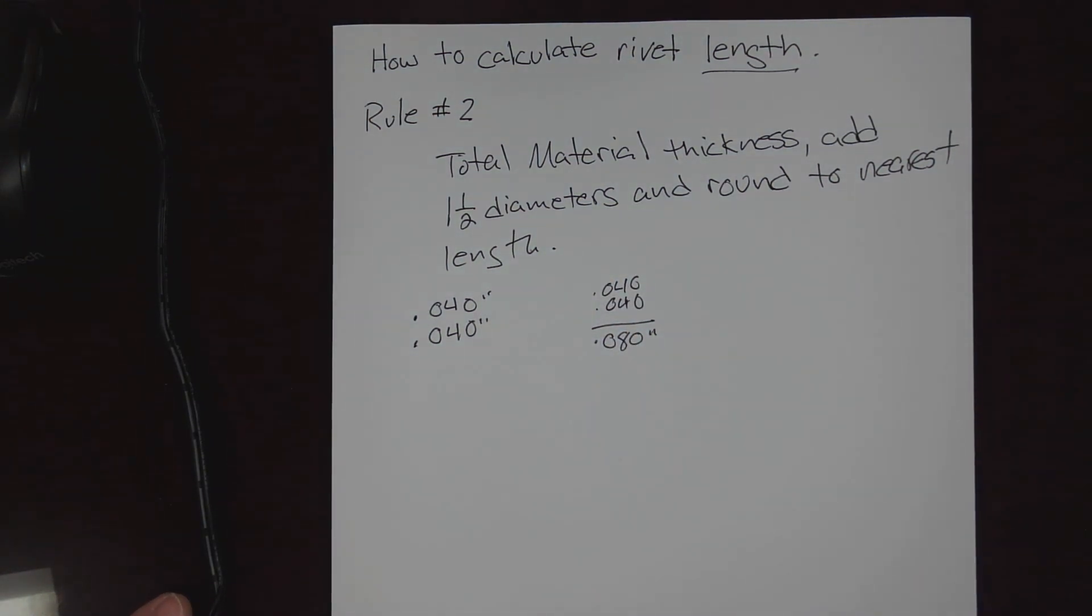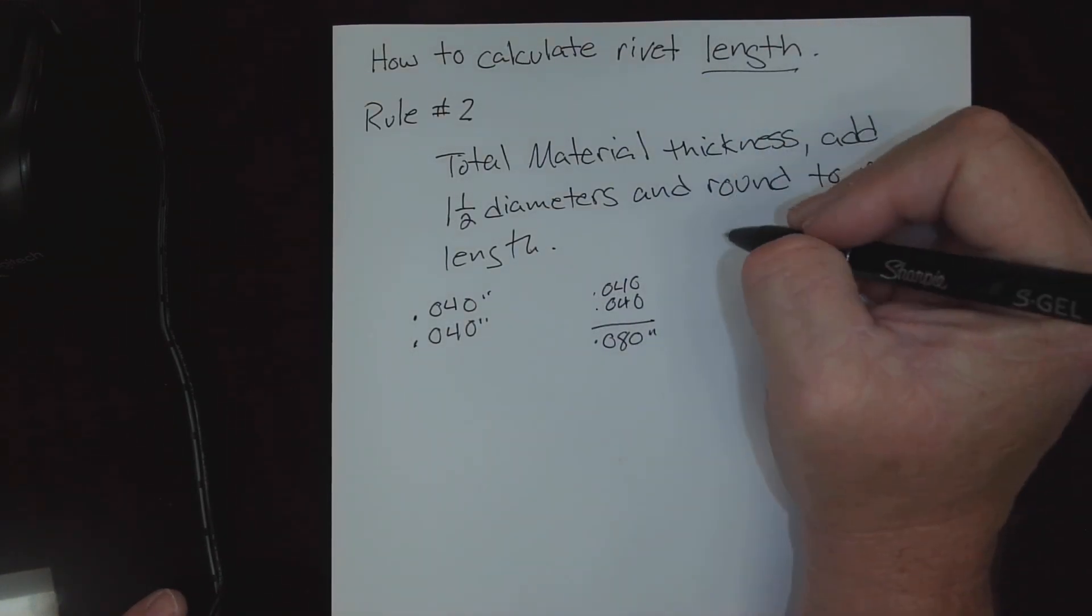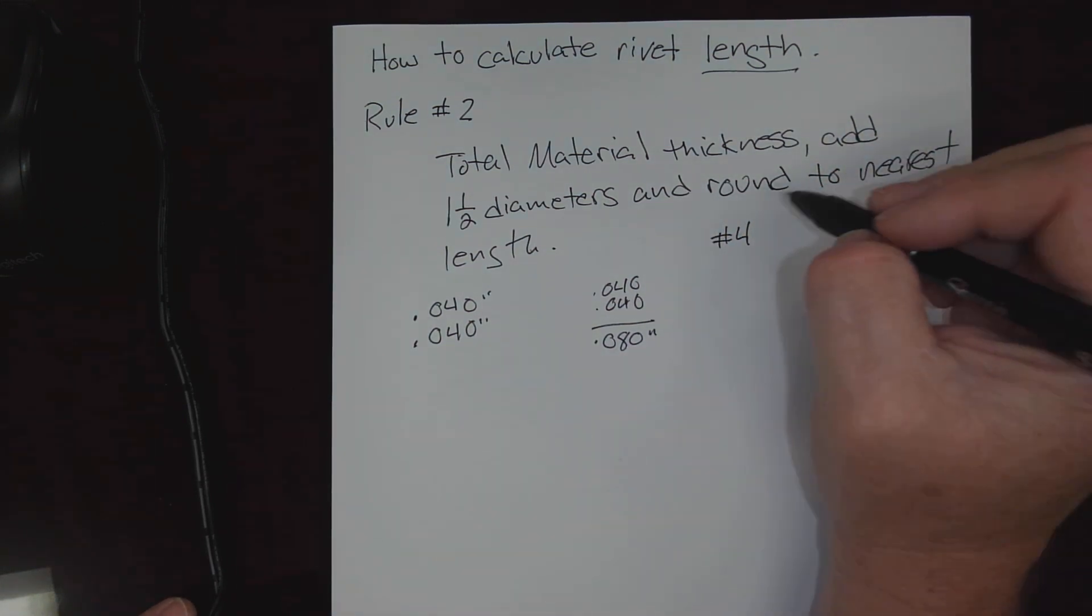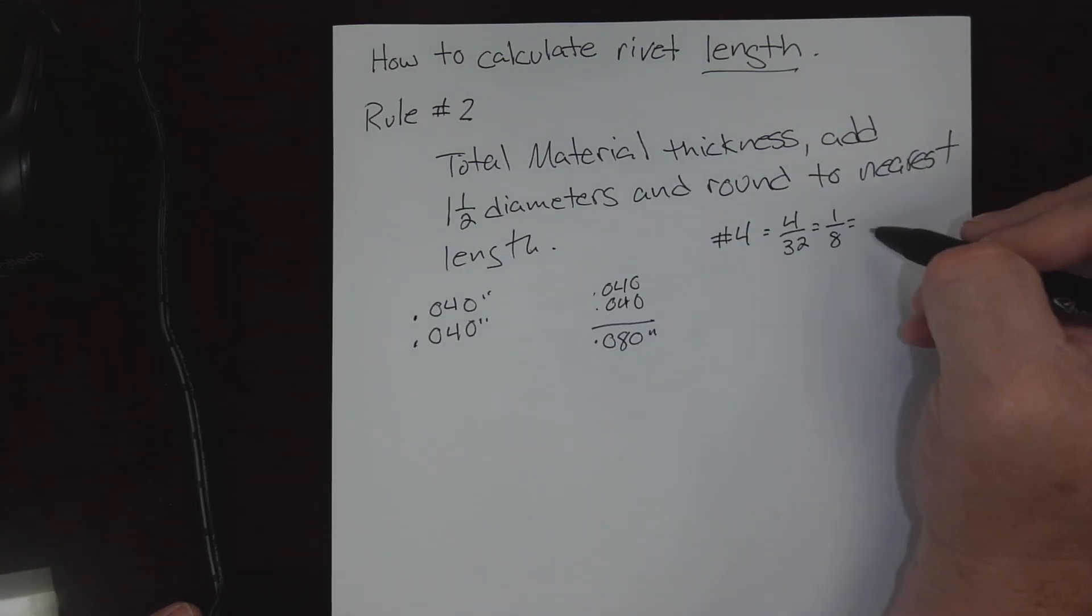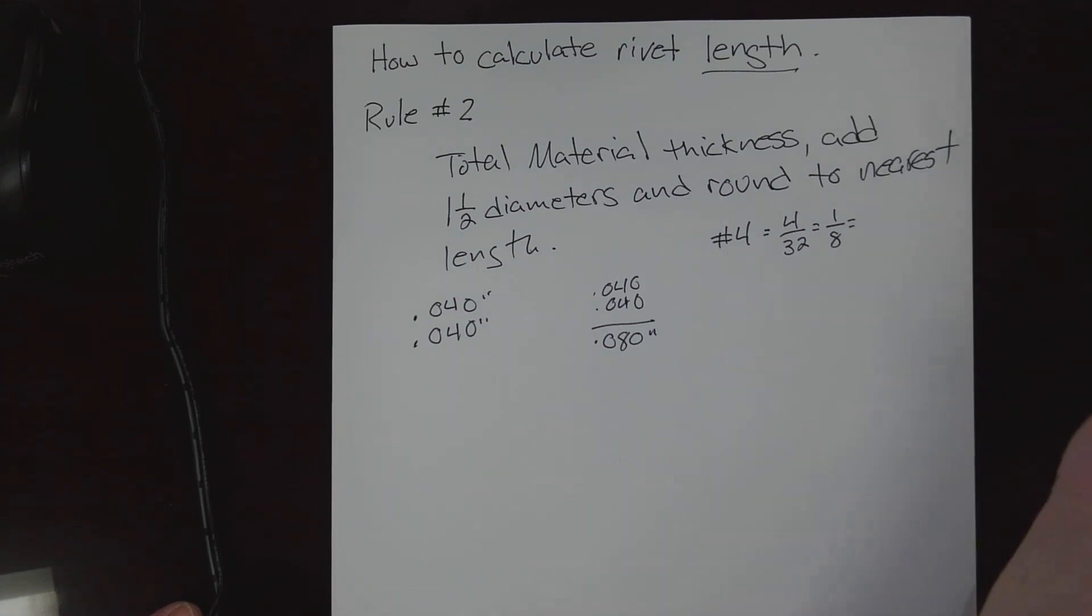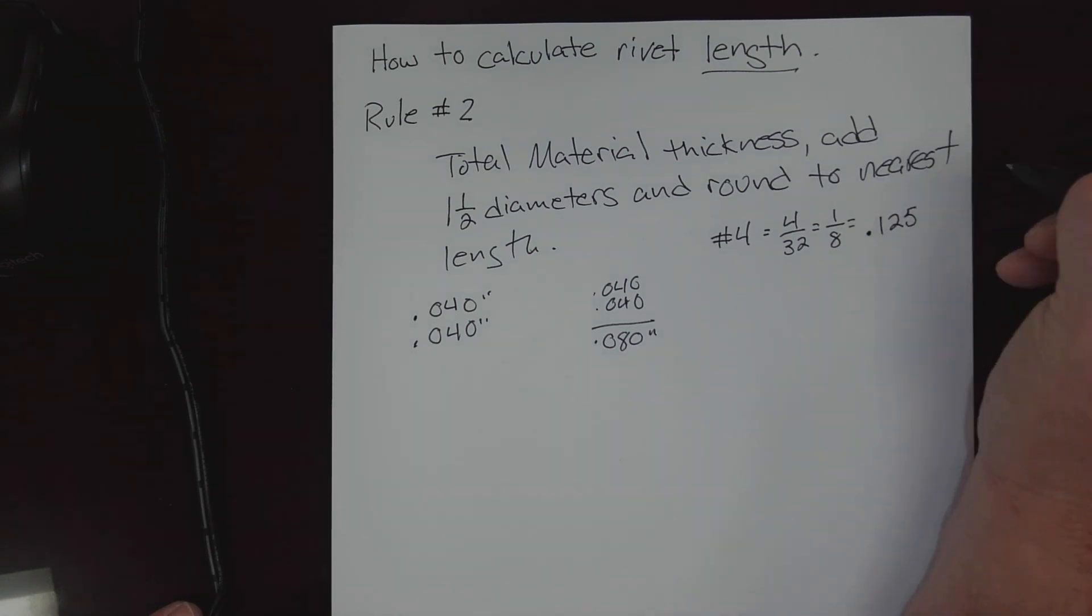40 thousandths plus 40 thousandths, well that's 80 thousandths. Now the next part of this rule is to add one and a half diameters. From the previous video, we determined that it was a Number 4 rivet, and a Number 4 rivet is also equal to 4/32nds, which is also equal to, if we simplified everything, one eighth of an inch. But we need that in decimal form - it's easier to work that way. One eighth, one divided by eight, is going to be 0.125.